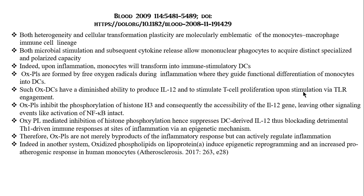OxPL-mediated inhibition of histone phosphorylation suppresses dendritic cell-derived interleukin-12 and blockades detrimental Th1-driven immune responses at sites of inflammation via an epigenetic mechanism. In another system, oxidized phospholipids on lipoproteins induce epigenetic reprogramming and an increased pro-atherogenic response in human monocytes, as found in a paper published in Atherosclerosis in 2017. These oxyphospholipids are now acting as agents of change by altering epigenetic patterning through phosphorylation and acetylation of key histones cis-proximal to promoter regions, allowing transcription of various pro- and anti-inflammatory cytokines, thus modulating inflammation.